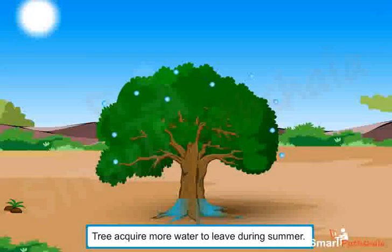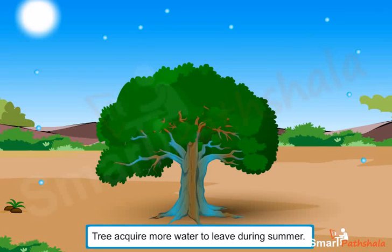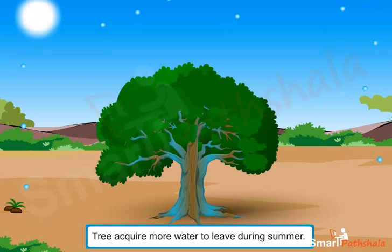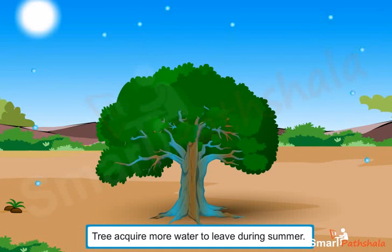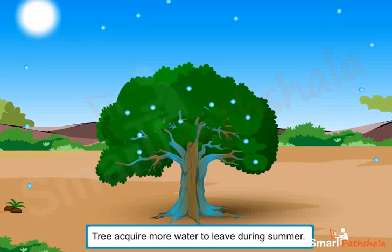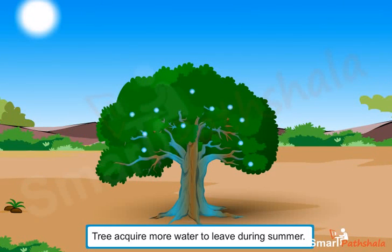In summer, trees acquire more water to their leaves because evaporation of water from leaves helps the tree to keep cool. During summer, when the temperature is high, a tree must transpire more to keep itself cool. More evaporation requires more water to the leaves, so trees acquire more water to their leaves during summers.